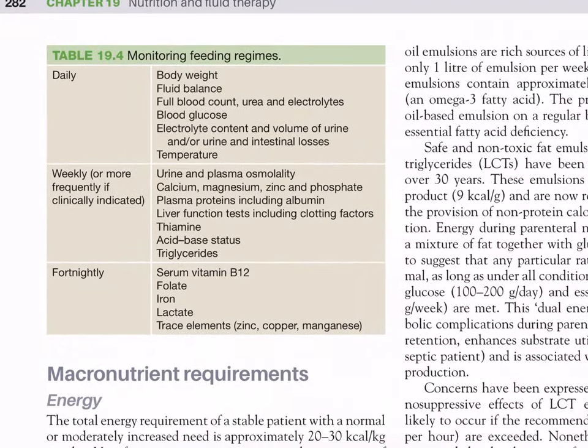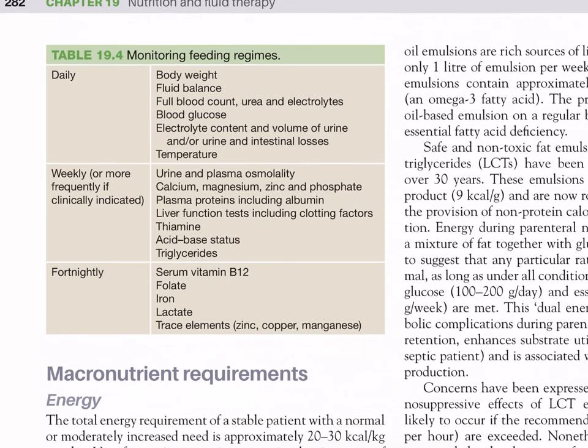Table 19.4 — Monitoring feeding regimens: daily monitoring includes body weight, fluid balance, full blood count, urea and electrolytes, blood glucose, electrolyte content and volume of urine and intestinal losses, and temperature. Weekly or more frequently if clinically indicated: urine and plasma osmolality, calcium, magnesium, zinc, phosphate, plasma proteins including albumin, liver function tests including clotting factors, thiamine, acid-base status, and triglycerides.